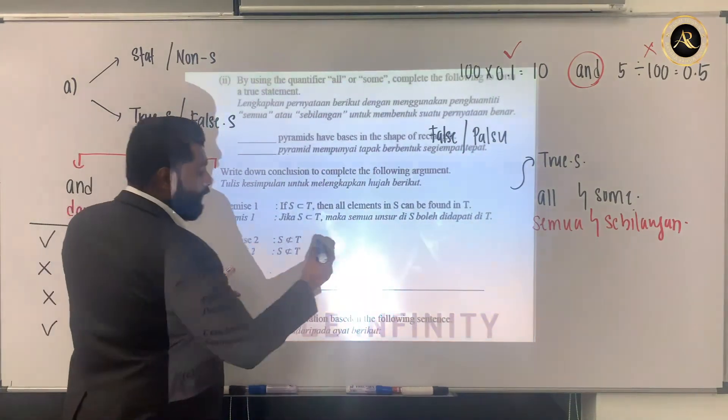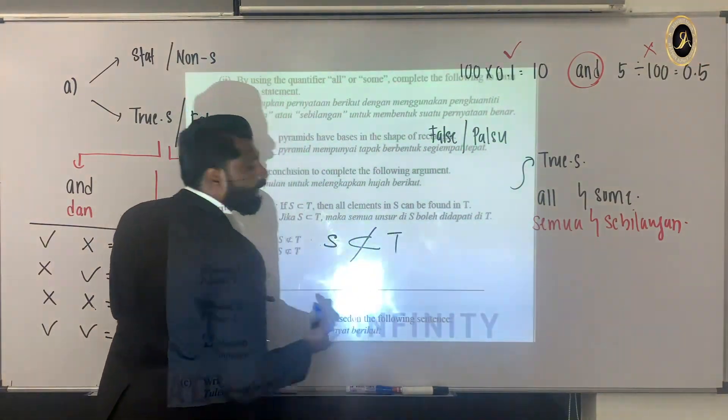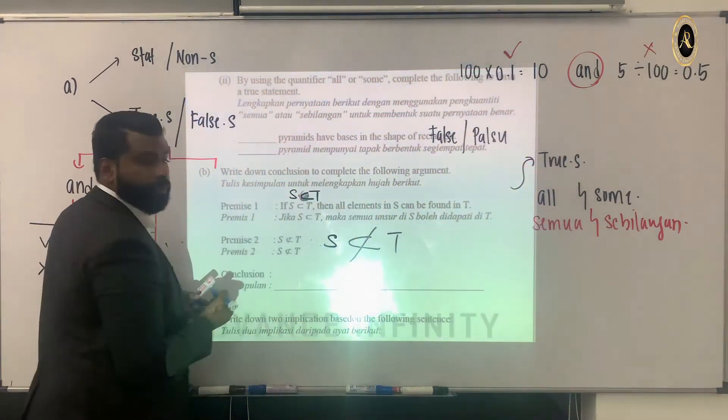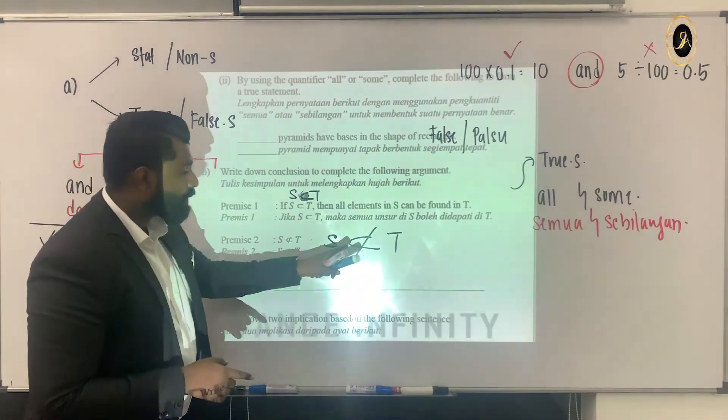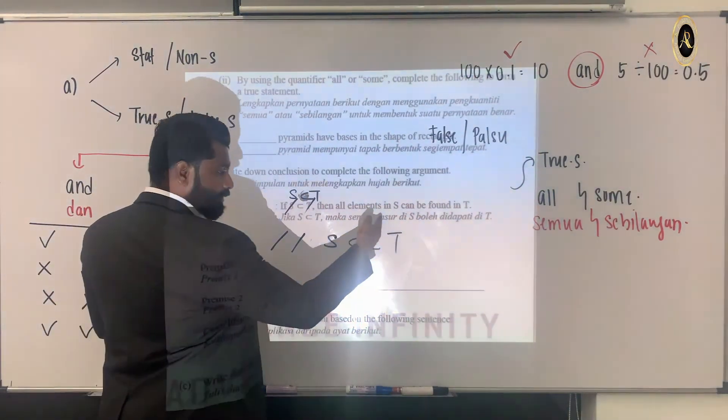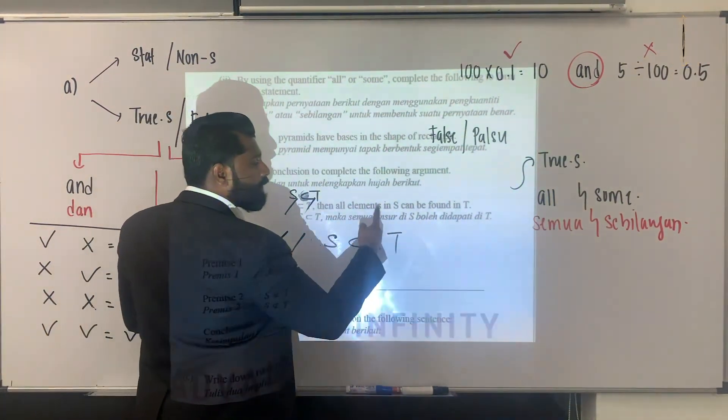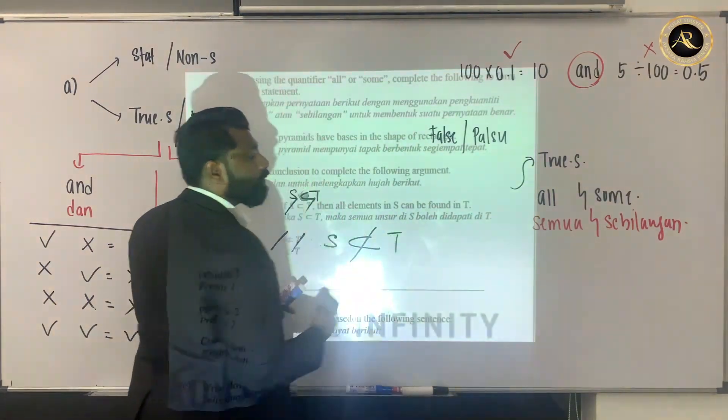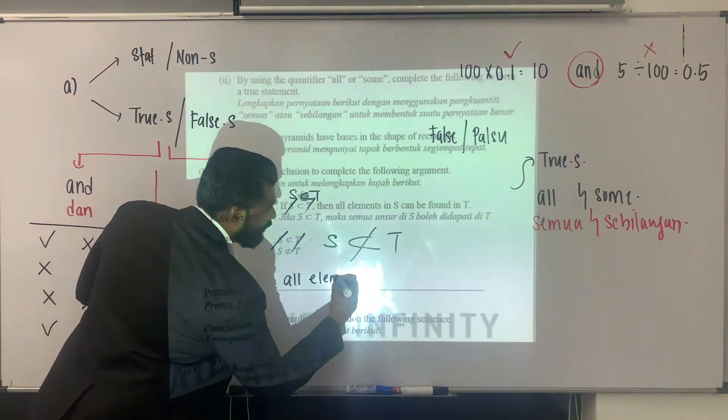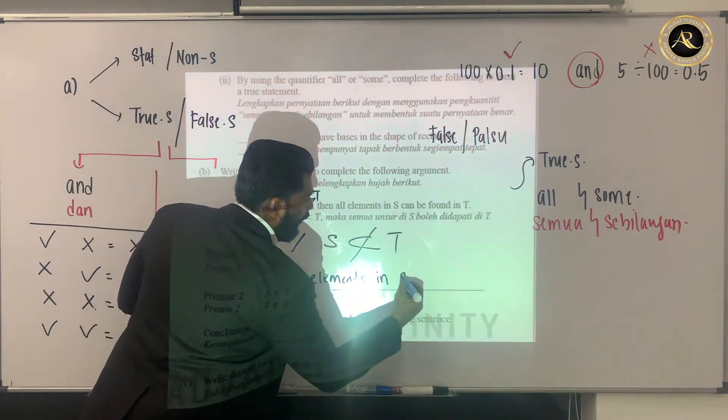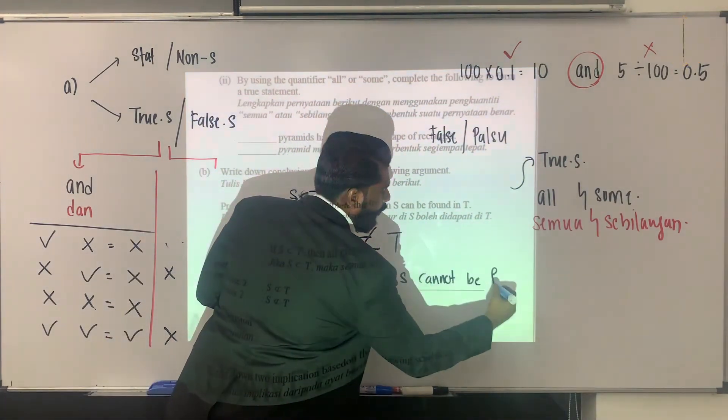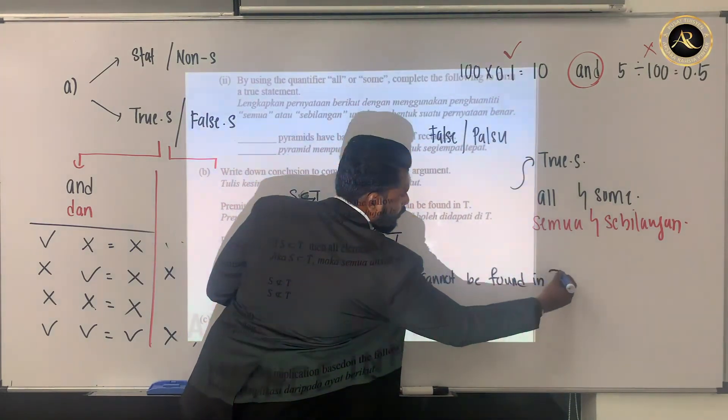Here they say S is not a subset of T. If it's a subset of T, then you can be found in T. But is it a subset? No. You can see S intersect T, so since this cannot happen, all elements in S cannot be found in T. So the answer will be: all elements in S cannot be found in T.